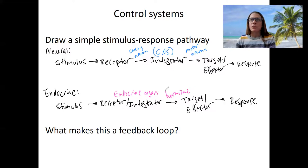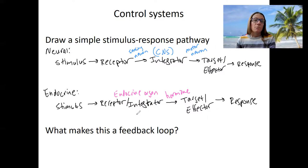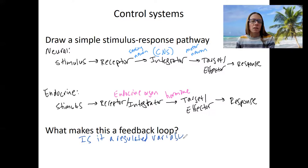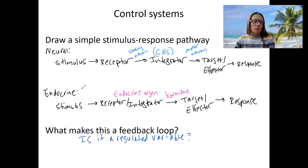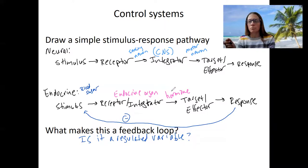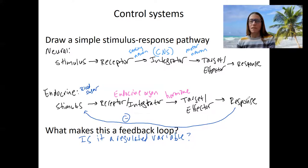So these are both stimulus response pathways. The knee-jerk reflex is not an example of a feedback loop, but glucose regulation is. What makes this a feedback loop is whether there is a regulated variable. Blood sugar is a regulated variable, so this response is going to feed back to turn off the system once our body has responded to the high or low blood sugar, maintaining homeostasis.